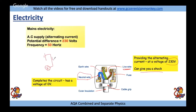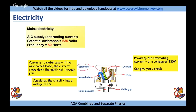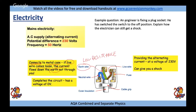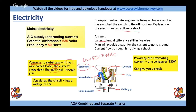The live wire provides the alternating current at 230 volts and can give you a shock if touched. The neutral wire completes the circuit. The earth wire connects to the metal case of an appliance - if the live wire comes loose and touches the metal case, the current flows down the low-resistance earth wire rather than through you. A typical question: an electrician switches off at the wall but can still get a shock because the live wire carries 230 volts and the person provides a path for current to flow to ground.